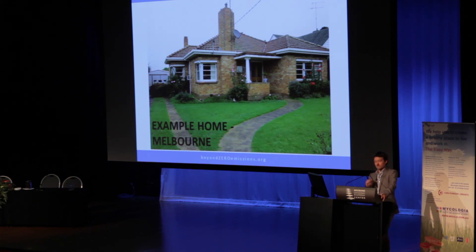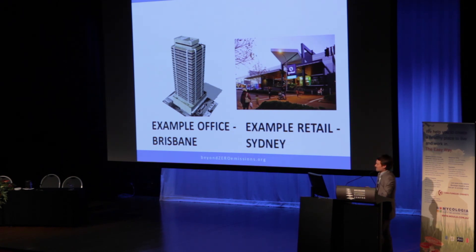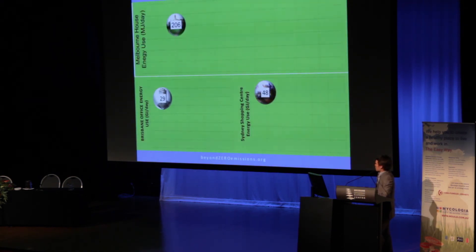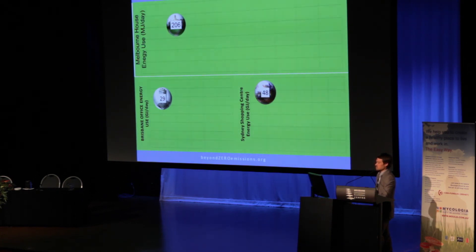I want to look at a few example buildings and some of the modelling we've been doing. Here's a brick veneer house in Melbourne, an example office in Brisbane, and a shopping centre in Sydney. We haven't directly modelled these places, just showing some pictures. Looking at where they sit on the scale of energy consumption: the house is about 206 megajoules of energy use per day; the office about 29 gigajoules per day; and a shopping centre about 48 gigajoules per day.